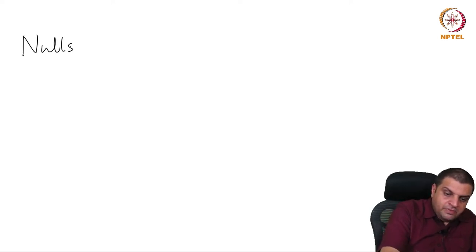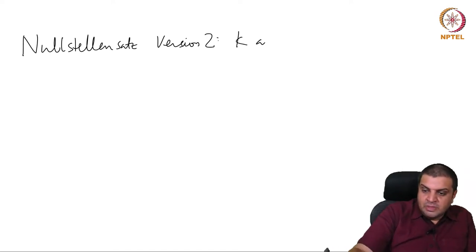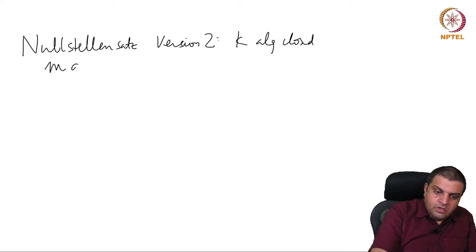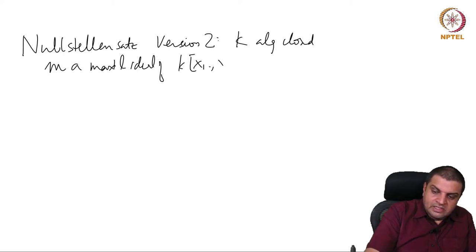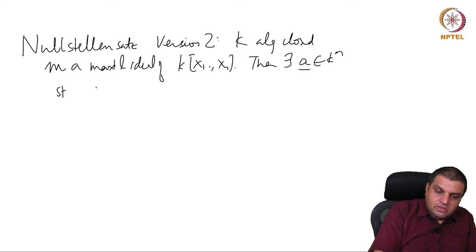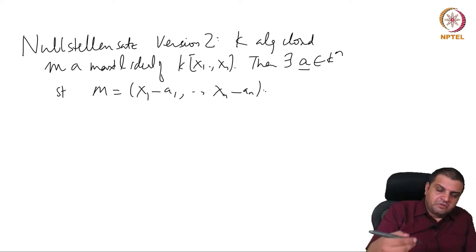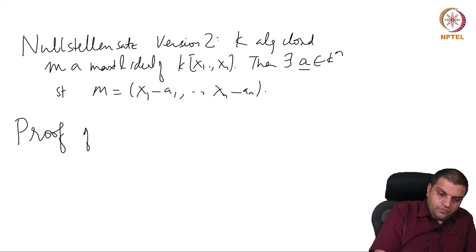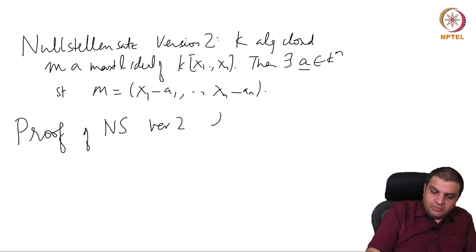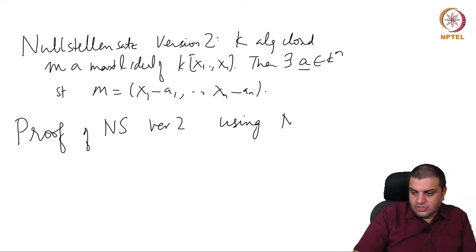We will prove version 2 of Nullstellensatz from version 4. Recall version 2 was: K algebraically closed, M a maximal ideal of K[X1,...,Xn], then there exists some A inside K^n such that M equals (X1 minus A1,..., Xn minus An). Now we will prove version 2 using Nullstellensatz version 4.